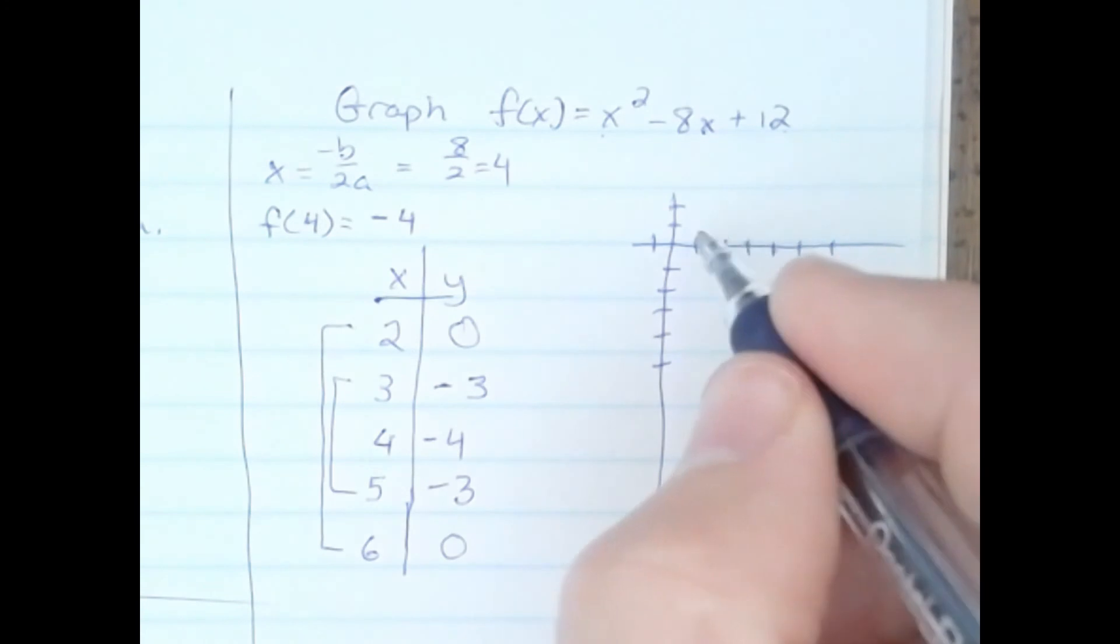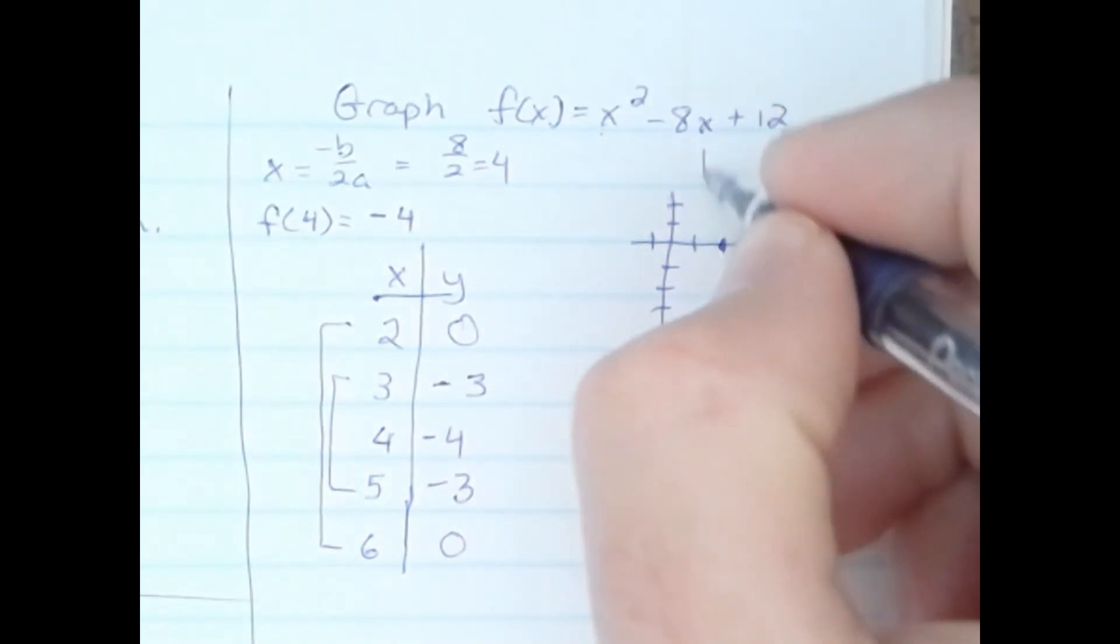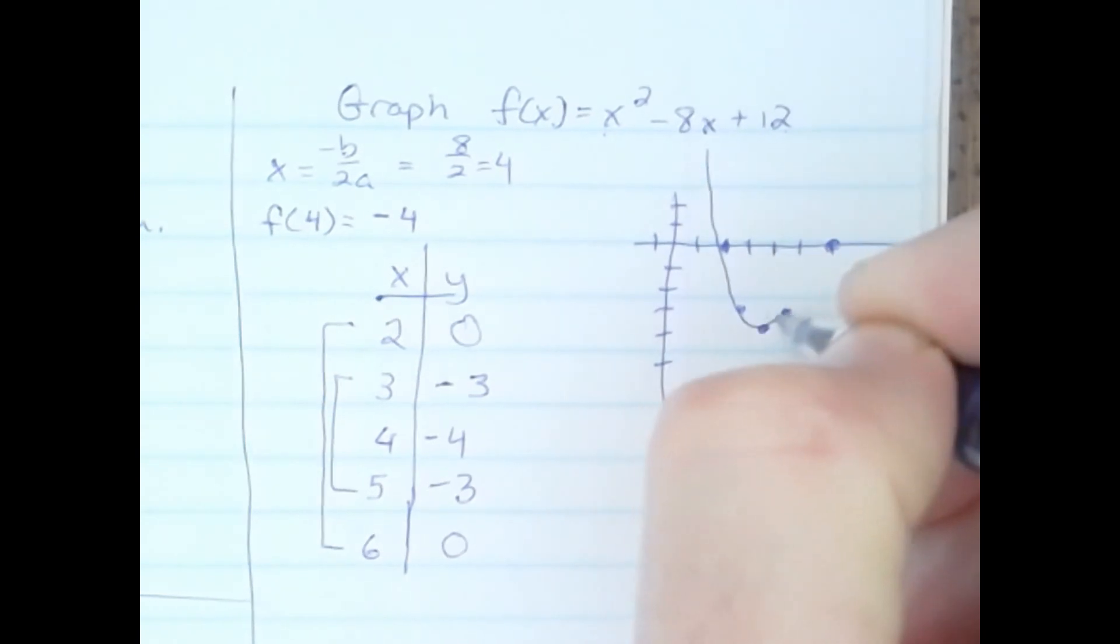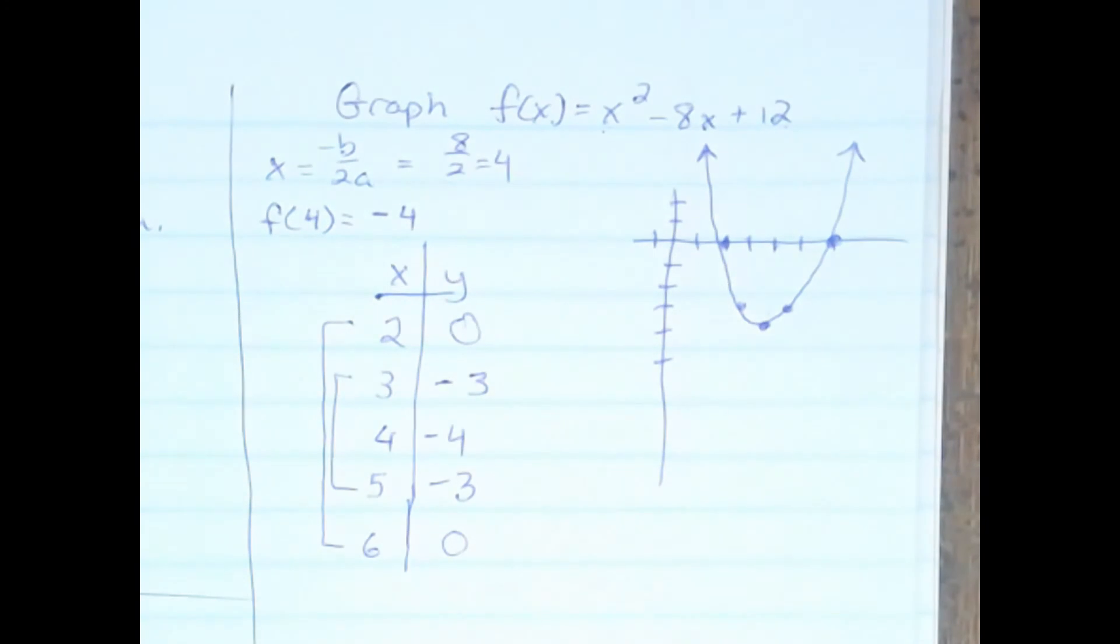The other points: right 3 and down 3, right 5 and down 3. And then 2, 0 and 6, 0. And there is our parabola.